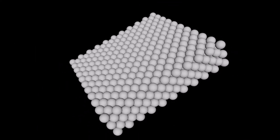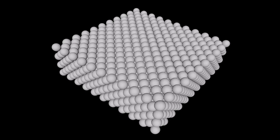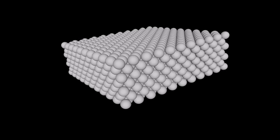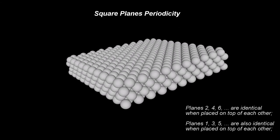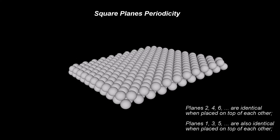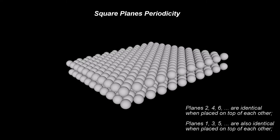A simple periodicity emerges: 1, 2, 1, 2, 1, 2, and so on. Planes 2, 4, 6 are identical when placed on top of each other. Planes 1, 3, 5 are also identical when placed on top of each other.